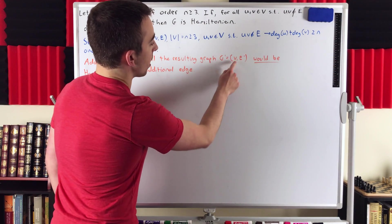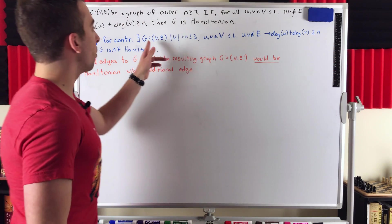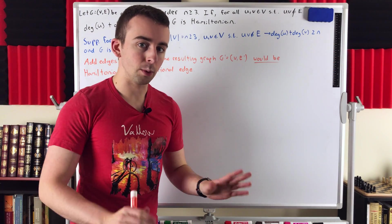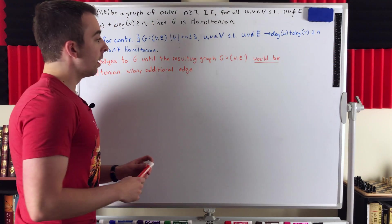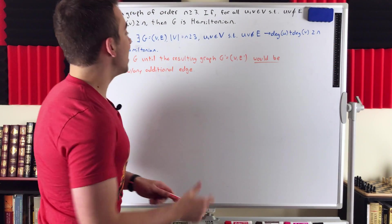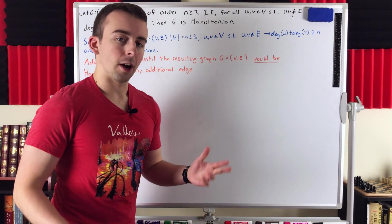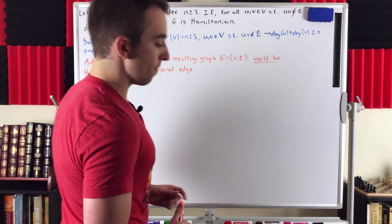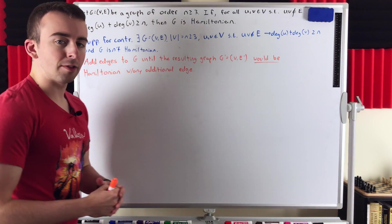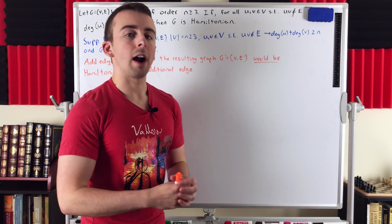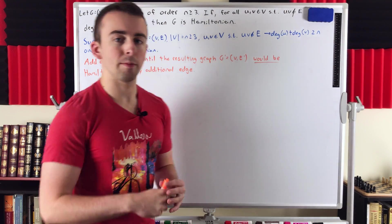G prime has vertex set V — the same as G — which makes sense because all we did was add edges to G, so we still have the same vertices. It's got an edge set we'll call E prime. E prime may be equal to E; it may be the case that G equals G prime, but we don't know. Basically, our non-Hamiltonian graph G must be a subgraph of some maximally non-Hamiltonian graph with the same vertex set.